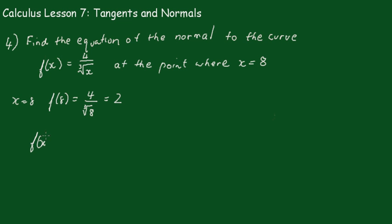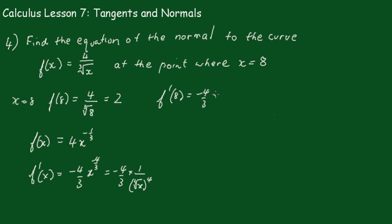Again, rearranging this in index form, we have 4x^(-1/3). So when you differentiate this, be careful with the signs, you'll get -4/3 x^(-4/3). Which is -4/3 times 1 over the cube root of x all raised to the 4th power. So when we put in the 8, f'(8), we're going to get -4/3 times 1 over (∛8)⁴.